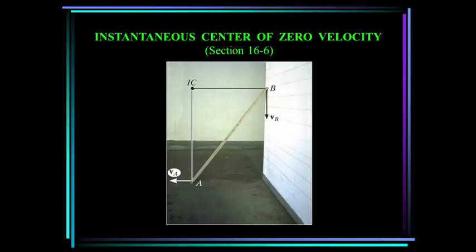For any body undergoing planar motion, there always exists a point in the plane of motion at which the velocity is instantaneously zero. This point is called the instantaneous center of zero velocity. Note that it may or may not lie on the body. If the location of this point can be determined, the velocity analysis can be simplified because the body appears to rotate about this point at that instant.